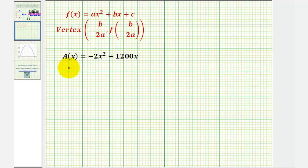So again, we already know that a is equal to negative 2, and b is equal to 1,200. And again, our goal here is to find the coordinates of the vertex. We'll begin by finding the x-coordinate of the vertex, so we'll let x equal negative b divided by 2a, where b is 1,200.